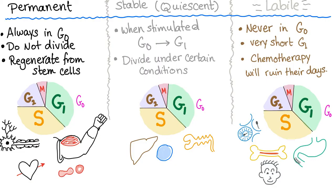Here are the different types of cells. Permanent cells — the name has the answer. Permanent means they do not change; permanent cells do not divide. So they are always in G0, always in the resting phase. They do not divide, so they regenerate from stem cells. For example, red blood cells do not divide — they come from their myeloid stem cells, and those stem cells can divide.